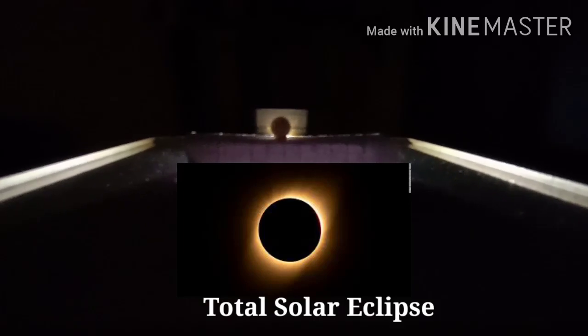In the area of dark shadow on the Earth, the Sun becomes completely invisible. This condition is known as total solar eclipse.